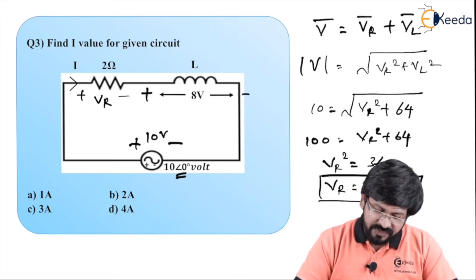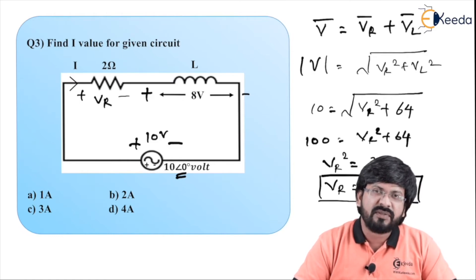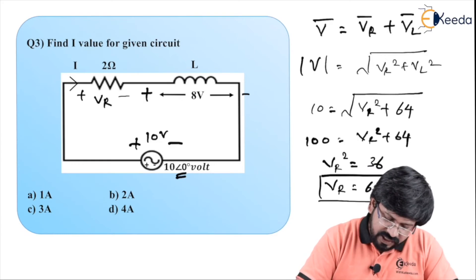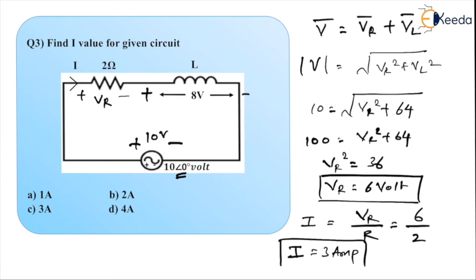Now it becomes very simple. Voltage across R is known and the resistor value is known. By applying Ohm's law, I is simply voltage across R divided by R. Voltage across R is 6 and resistor value is 2, so I equals 3 ampere. As you can see, 3 ampere is option C and option C is the correct answer.